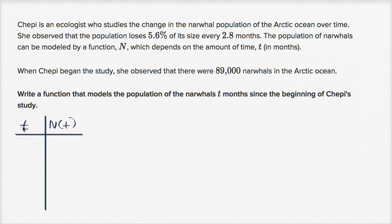First of all, if t is in months and n of t models the number of narwhals, when t is equal to zero, what is n of zero? Well we know that when t equals zero, there are 89,000 narwhals in the ocean, so 89,000.